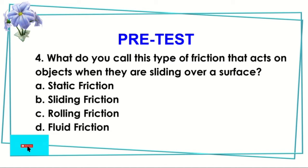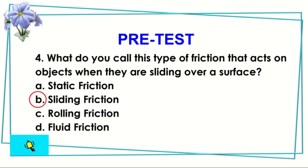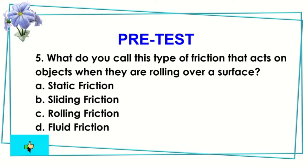Number four: What do you call the type of friction that acts on objects when they are sliding over a surface? Is it static, sliding, rolling, or fluid friction? The answer is sliding friction.